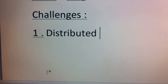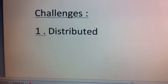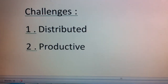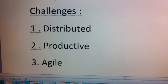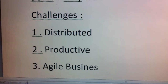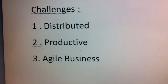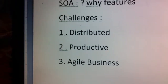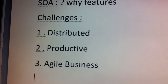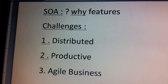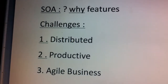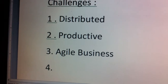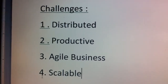The second challenge is that the system developed should be productive. The third challenge is agile businesses — any changes in the business environment will directly reflect on the IT team. So if a system is developed for Business A and Business A merges with another business, the system must adapt to all the changes happening in the business environment. The fourth challenge is that the system should be scalable.